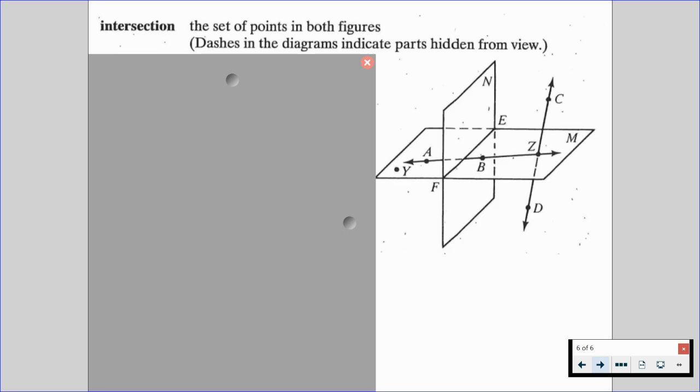We also have this phrase that's called the intersection. It's a set of points in both figures. Dashes in the diagrams indicate parts that are hidden from the view. So if you look at the back side of plane N under plane M, you're going to see a couple dash lines because technically that set right there, that section of the plane, should not be visible if we had a solid plane M and a solid plane. So we show those dash lines to show that this part of the plane does exist, but we just can't really see it because it would be hidden if we were looking at it with our own eyes.